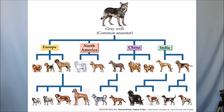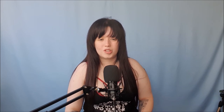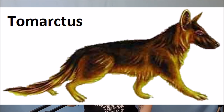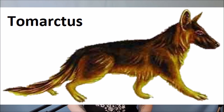Better known as the bear dog, this ancestor gave rise to two branches on the family tree — one in Eurasia and one in Africa. The Eurasian branch — the Tomarctus, though I'm not sure of the pronunciation — is where your wolves, dogs, and foxes originated from.